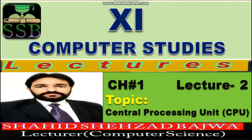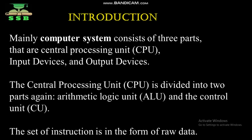Central Processing Unit means we are talking about a system which controls the entire system running in the computer. The basic structure of a computer system consists of three parts: input, output, and the CPU itself. The CPU is further divided into two parts: ALU (Arithmetic Logic Unit) and CU (Control Unit).